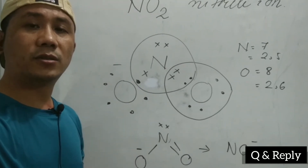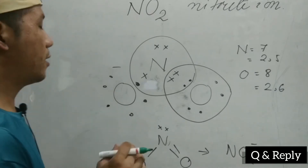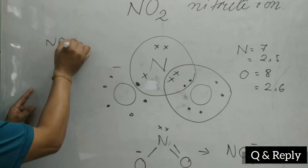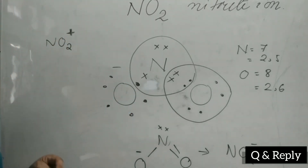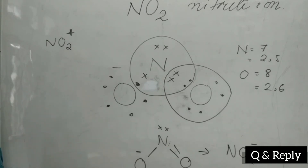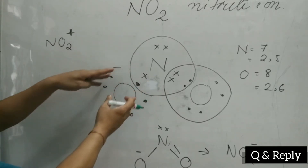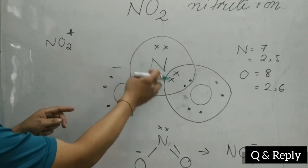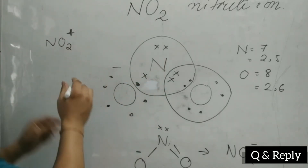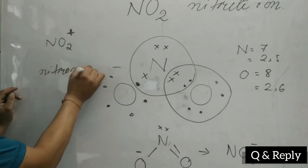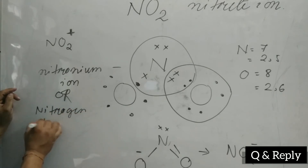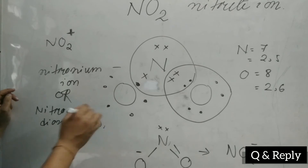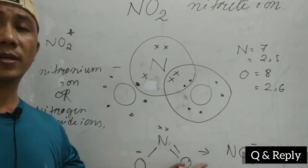So together we write this as NO₂ minus. Some of you commented that the NO₂ charge should be plus. In that case, this is not a nitrite ion — it is called the nitronium ion, or we can also call it the nitrogen dioxide cation. That plus charge is obtained by sharing along with oxygens. When oxygen shares two electrons, nitrogen will have one extra electron, and that is called the nitronium ion.